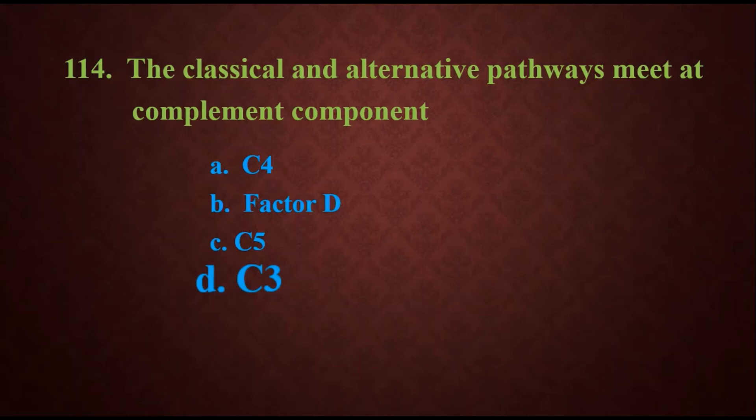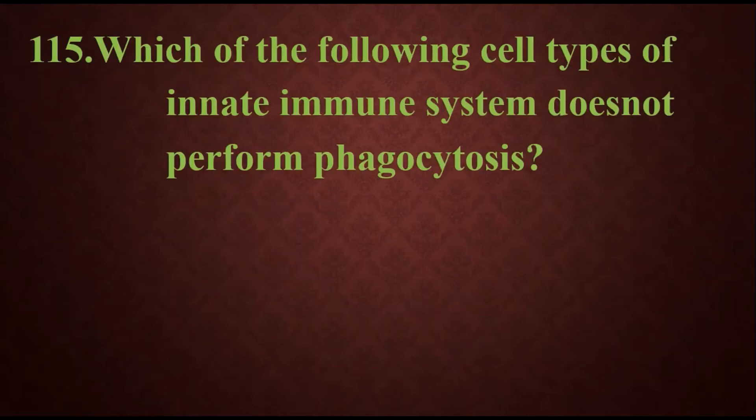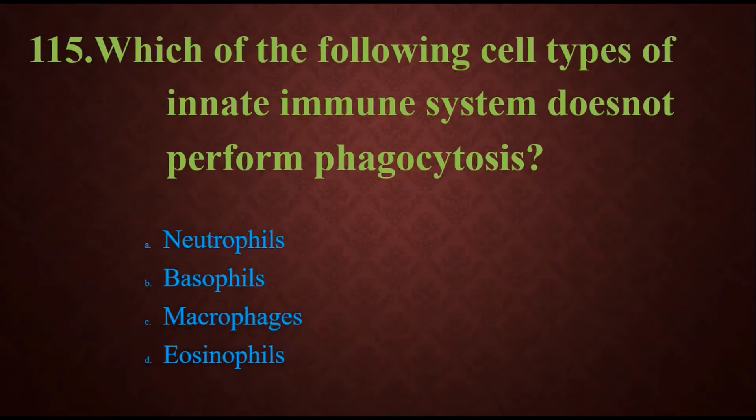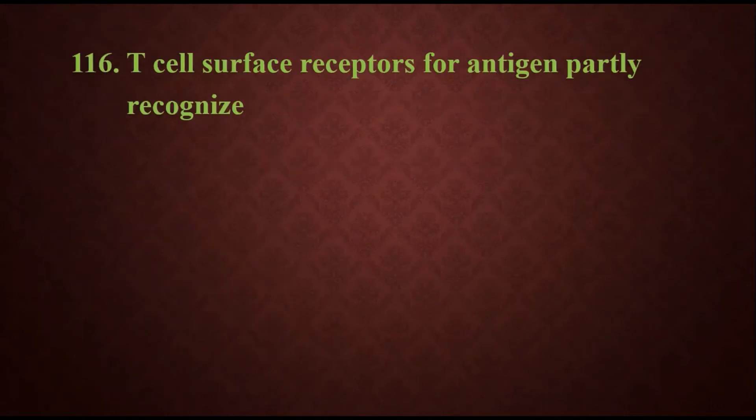Question 115: Which of the following cell types of innate immune system does not perform phagocytosis? Options are neutrophils, basophils, macrophages, or eosinophils. The option is basophils will not perform the phagocytosis mechanism.